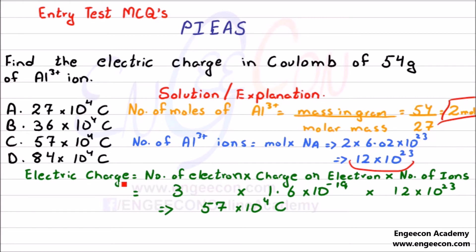As we know that the electric charge is equal to the number of electrons, in this case we have 3, charge on electron which is 1.6 × 10⁻¹⁹, and number of ions as we just calculated as 12 × 10²³.